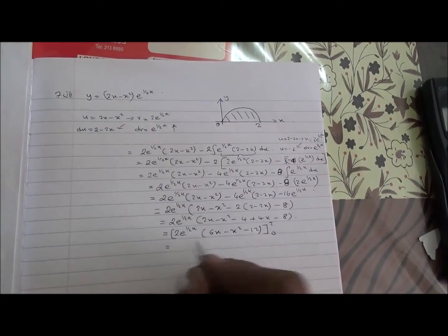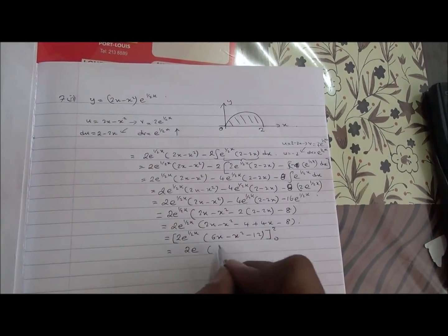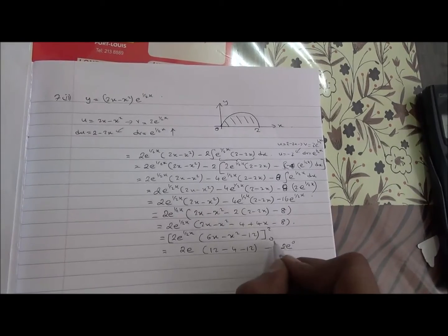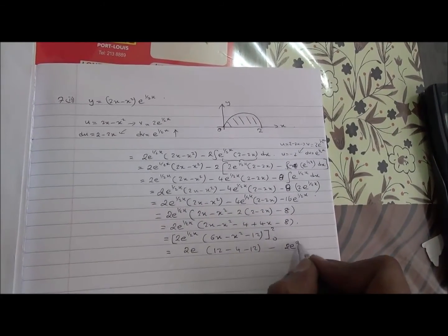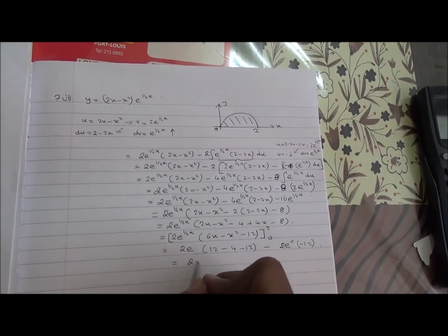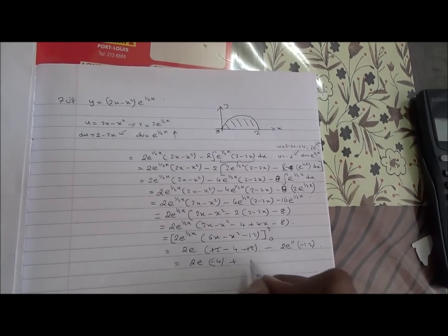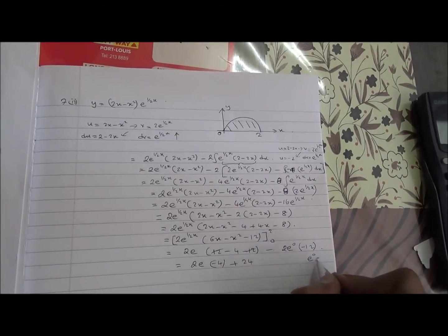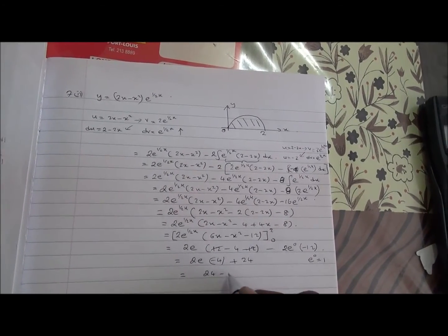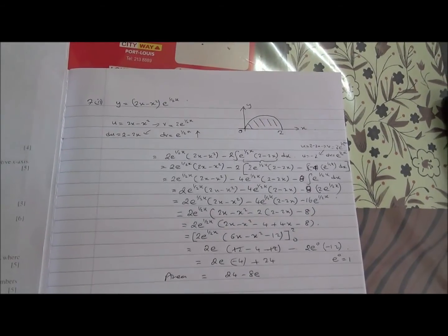Applying the limits 0 to 2: at x = 2, we get 2e^1·(12 - 4 - 12) = 2e·(-4) = -8e. At x = 0, we get 2e^0·(0 - 0 - 12) = 2×1×(-12) = -24. So the area = -8e - (-24) = 24 - 8e.